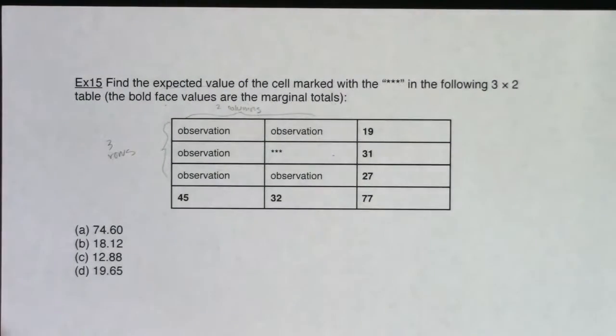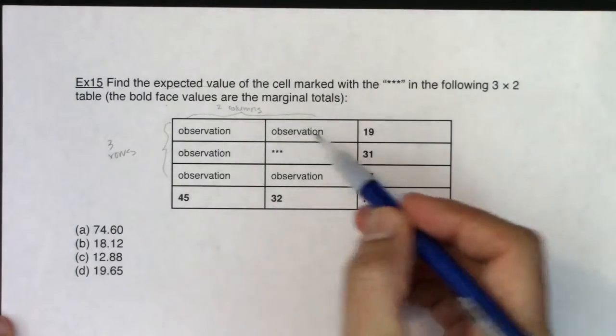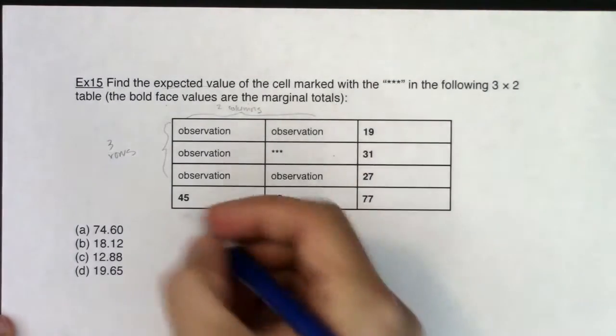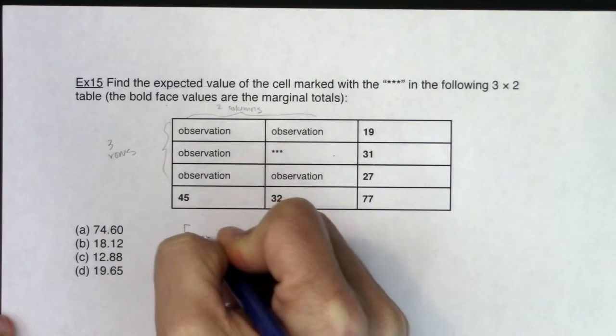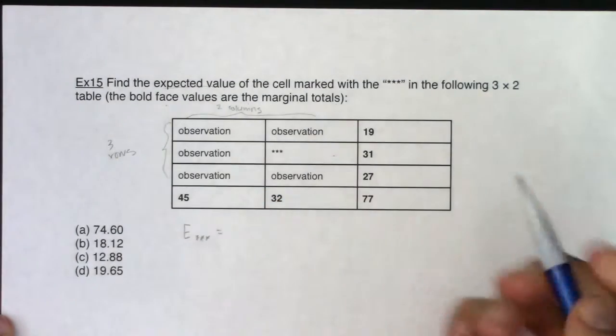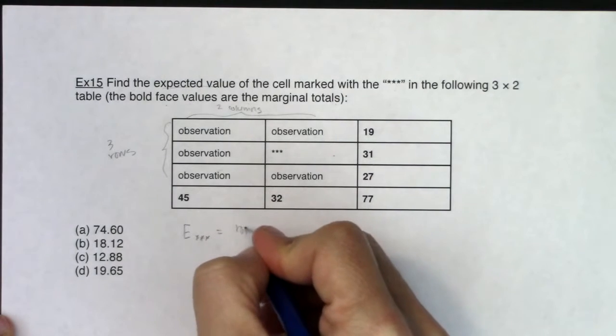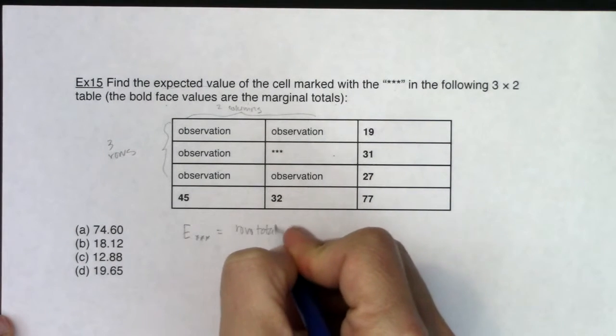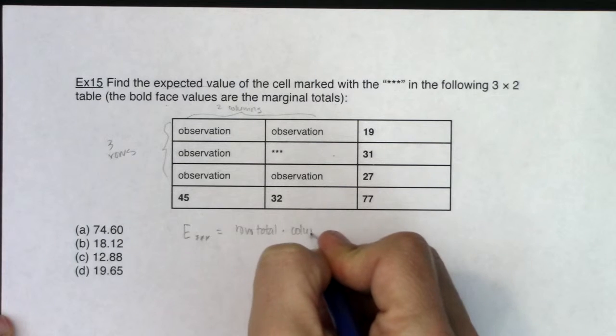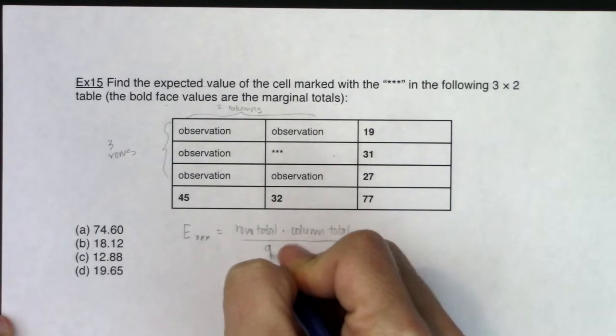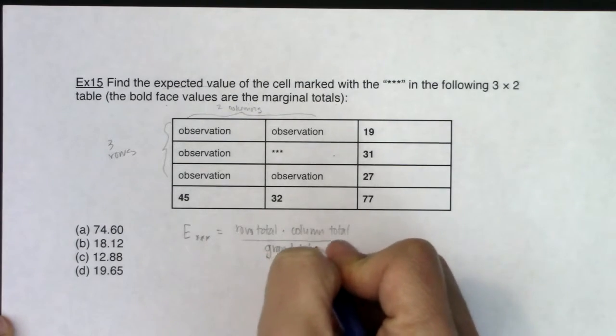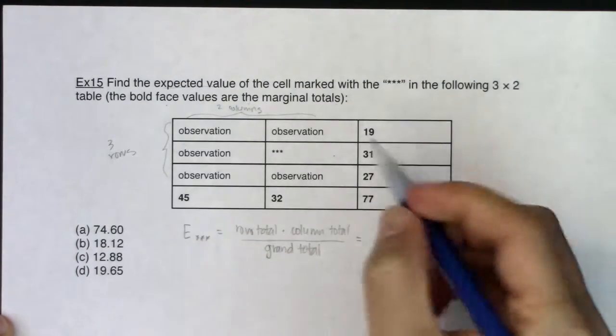Now I made this problem in such a way that you can't use your chi-squared test on your calculator because you don't know the observed values. This is me testing you. Did you know that the expected cell count for any cell is row total times column total over grand total. And if you remember that formula, then this problem unlocks.